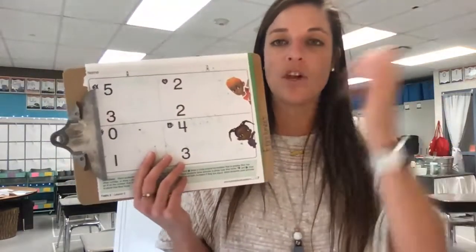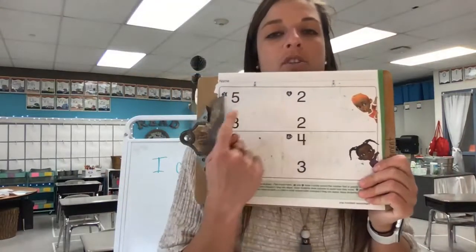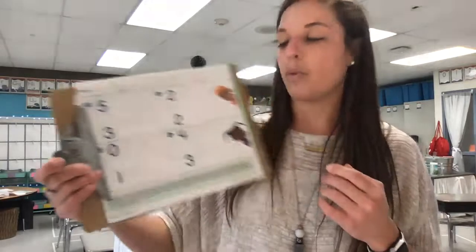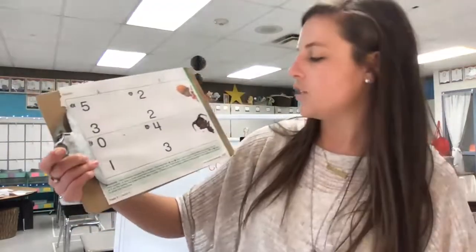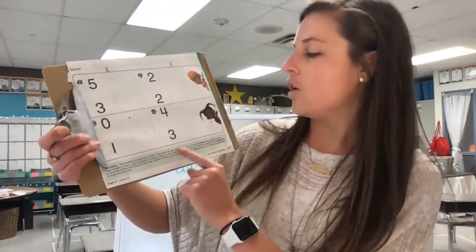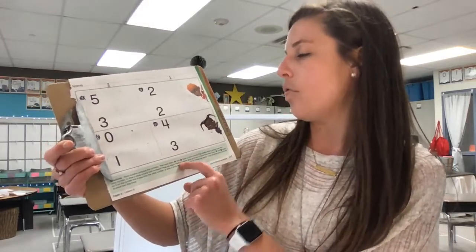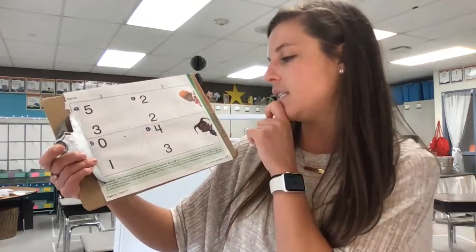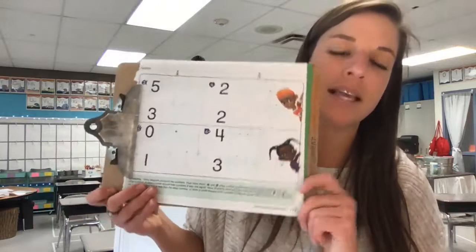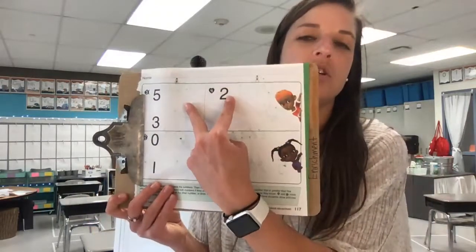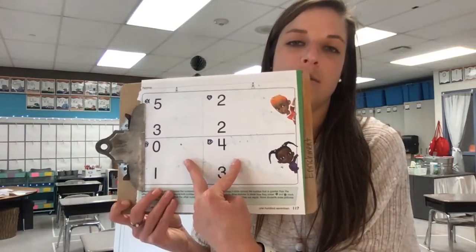Great job, friends. Great job comparing numbers. This is a hard skill to learn and we're learning it right off the bat, so you've been doing a great job. We're gonna flip back to page 117 — this is your math activity to complete and post to your teacher's Google classroom. You're gonna draw pictures to match the numbers. For problems three and four, draw a circle around the number that is greater, or around both if they're equal. For problems five and six, mark an X on the number that is less. Get it, got it? Good. Have a great day, friends — I'll see you tomorrow for math.